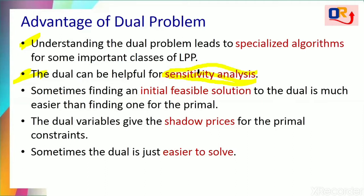The third point is that sometimes finding the initial basic feasible solution of the dual is much easier than the primal. We have used the big-M method and the two-phase method for finding the initial basic feasible solution. This may be avoided in the dual method — if you solve the dual problem, you can get the solution for the original problem, which is much easier.